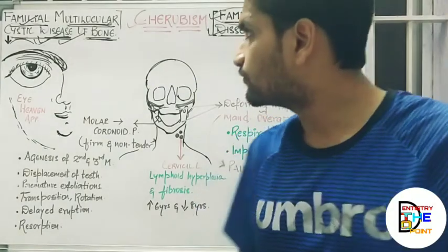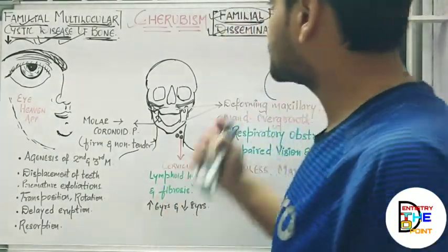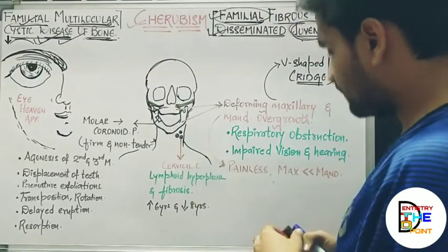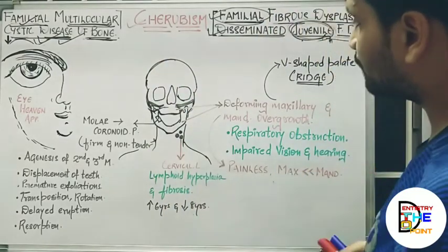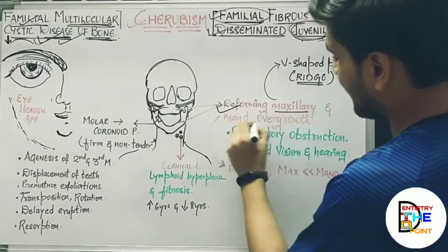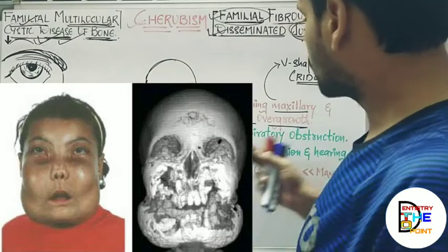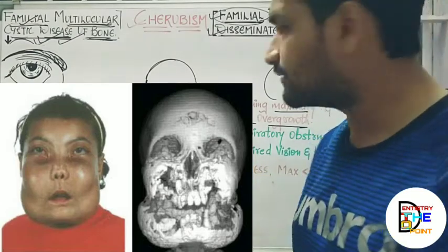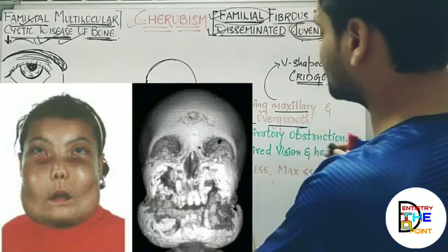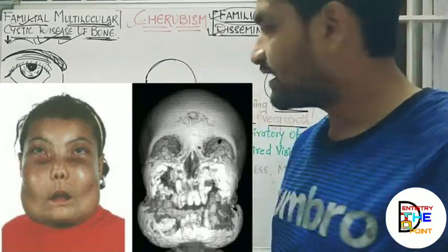Moving on to the clinical features or oral manifestations of cherubism. The first and foremost clinical feature is deforming maxillary and mandibular overgrowth. The growth of the maxilla and mandible will be greater compared to normal, so the size of the maxilla and mandible is going to increase.